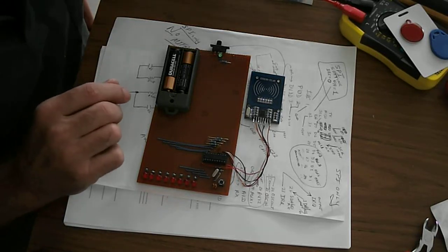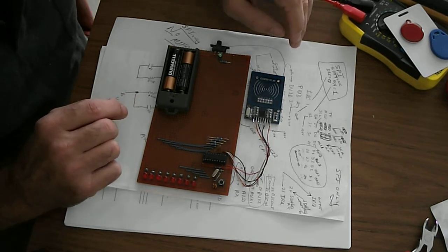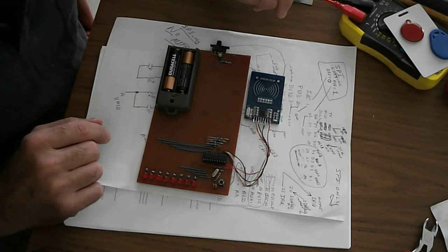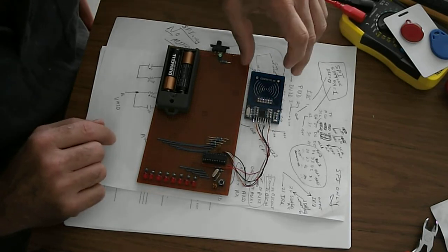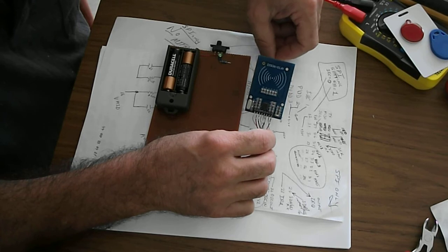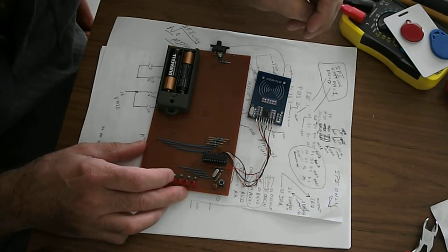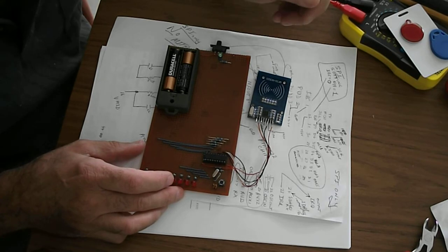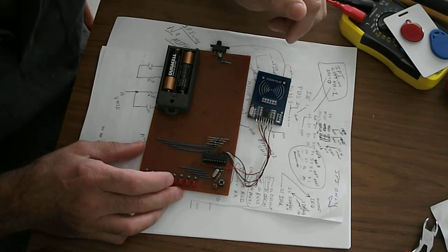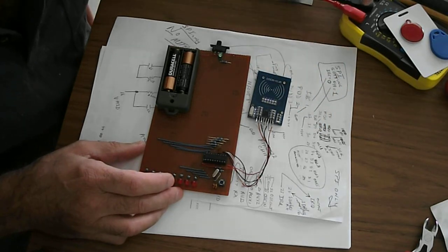I made this video to help you guys get this thing running. This is a little module that you get off eBay, the MF RC522 chip on it. It's a really nice little board but it's SPI only as the interface, so don't bother trying to get it running with anything else.